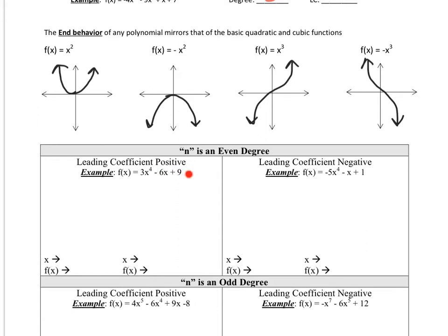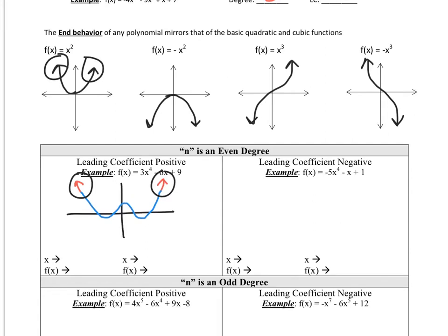Let's look at this example. We have n as an even degree — notice the degree is positive and even — and the leading coefficient, 3, is positive. So if I have a positive and even power, the end behavior is going to go up, up. Notice how I didn't put anything in the middle because we don't know what this polynomial looks like in between. As x approaches infinity, the graph heads up to infinity, so f of x goes to infinity. And as x approaches negative infinity, f of x also shoots up to positive infinity.